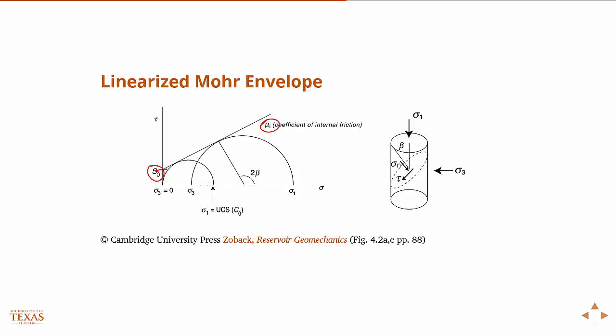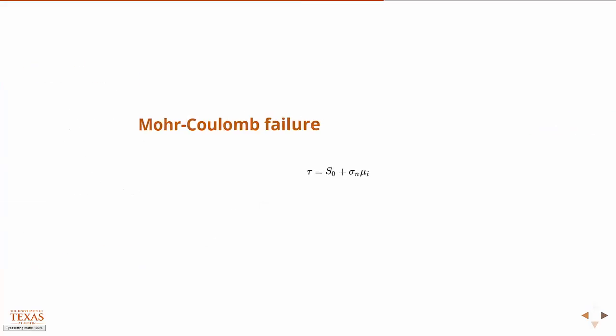The model is just the equation of the line. It's tau is the y-intercept plus the slope times the normal stress. But the cohesion is not something we can directly measure. We can infer it through a series of triaxial tests, or if we have an unconfined compressive strength, we can infer it just based on the geometry. There's a relationship based on the geometry and the internal friction angle between the unconfined compressive strength and the cohesion.